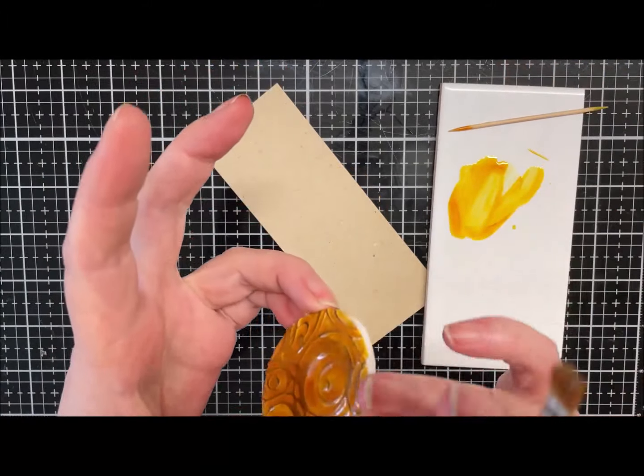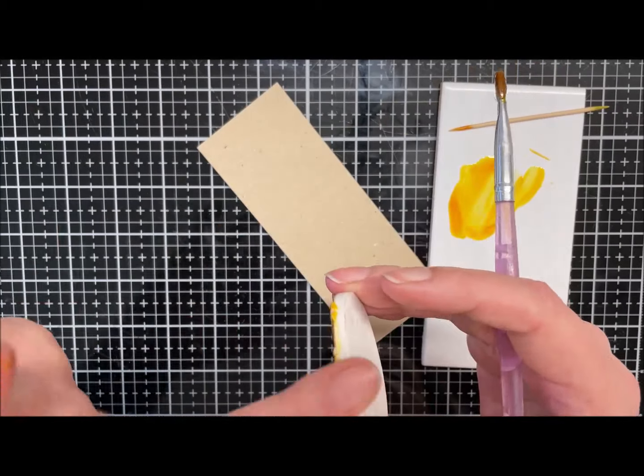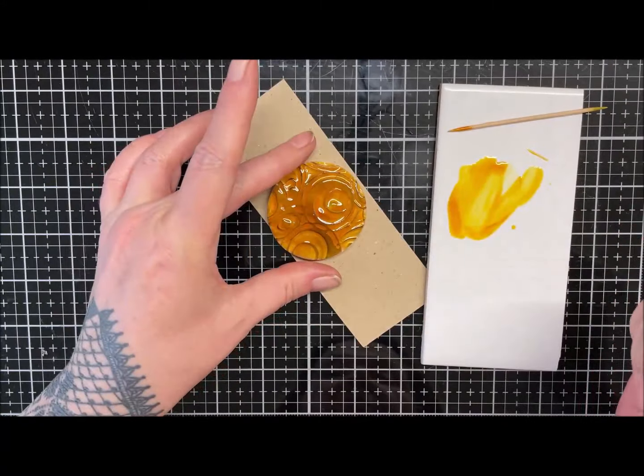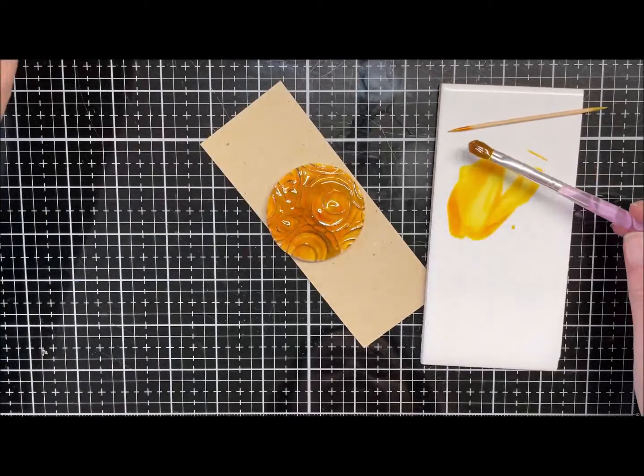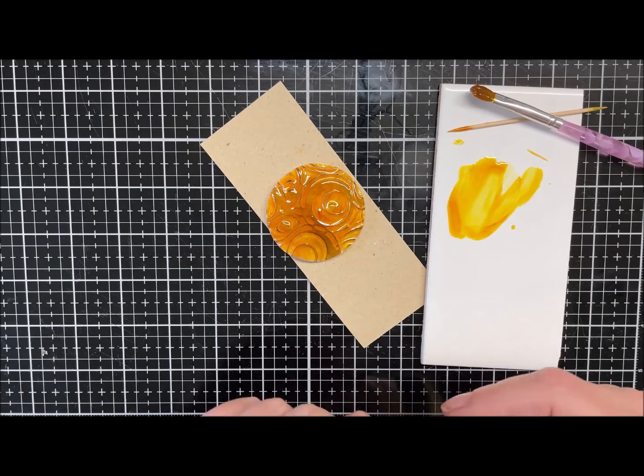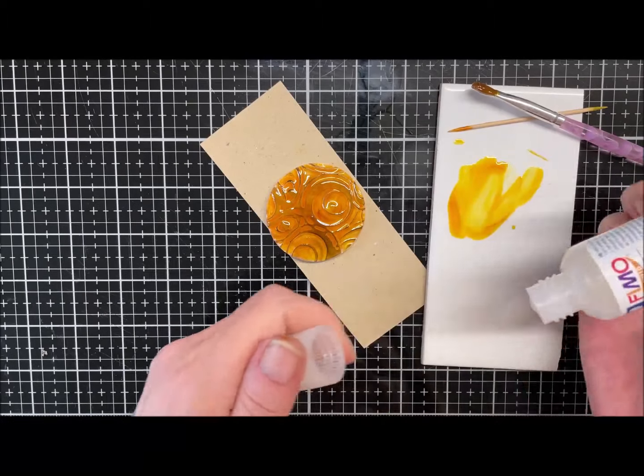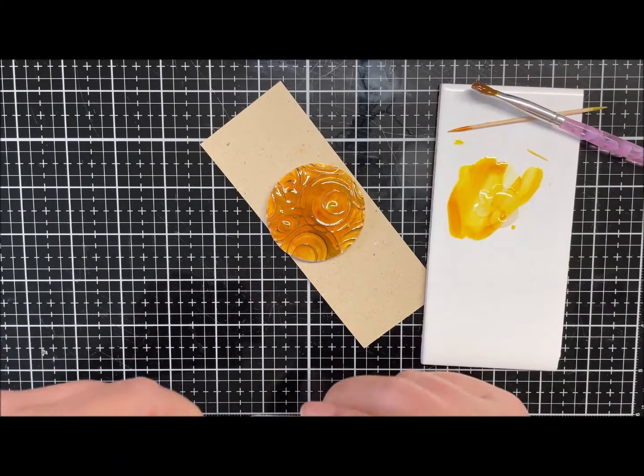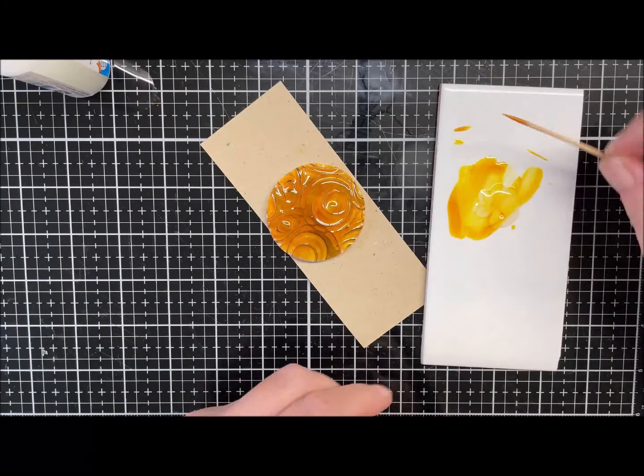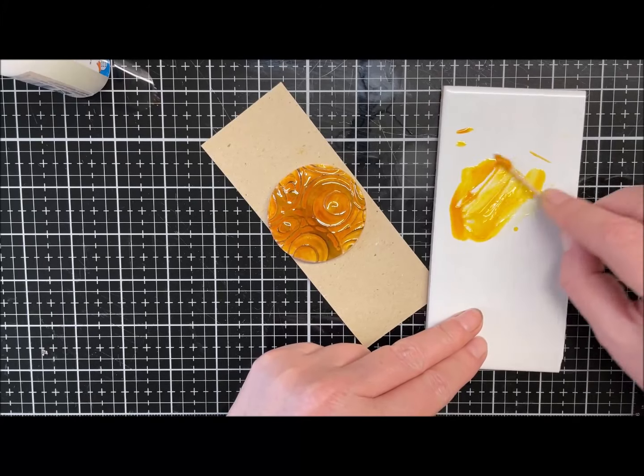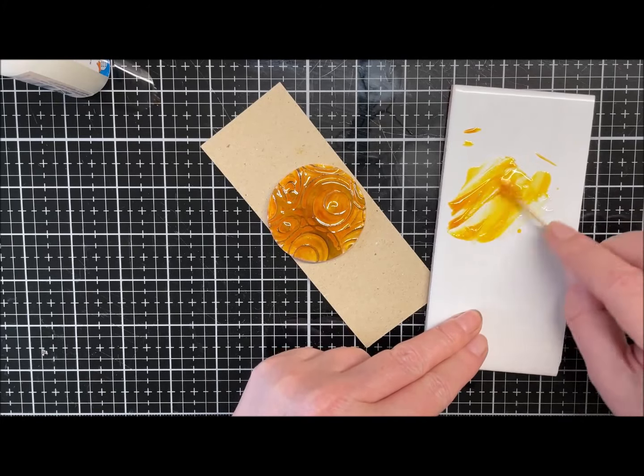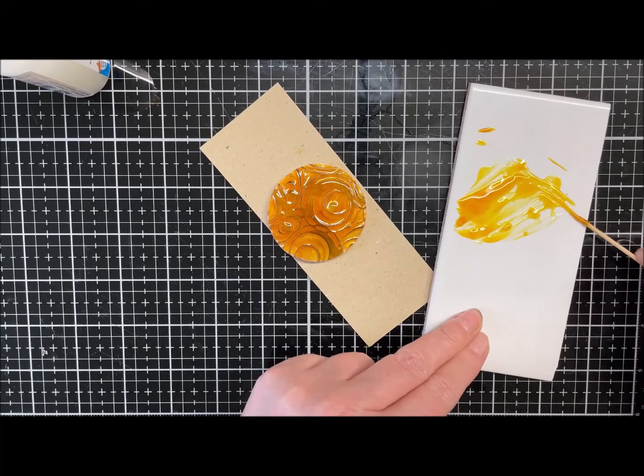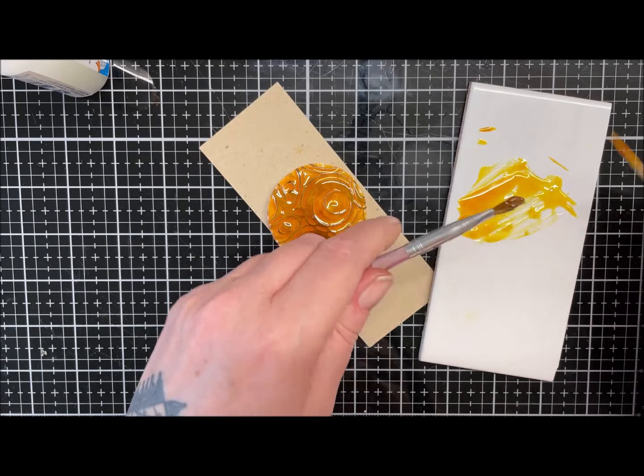Just make sure I've not got any drips down the edges. There we go. I will just add a little bit more. Oh, I've screwed the whole lid off. I'll just put a little dab on there and mix it with that remaining alcohol ink color. There, that'll do.